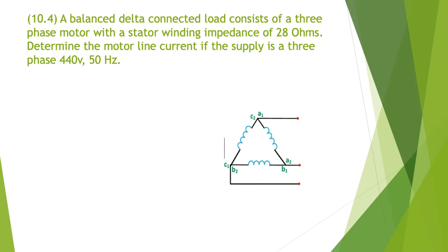So 10.4. A balanced delta connected load consists of a three phase motor with a stator winding impedance of 28 ohms. Determine the motor line current if the supply is a three phase 440 volts, 50 hertz. So straight away, let's label the diagram. We know that each of our windings is 28 ohms. Our phase and line voltages are the same. So we've got 440 volts across each of our delta connected phases.